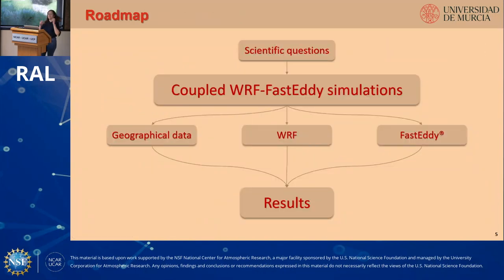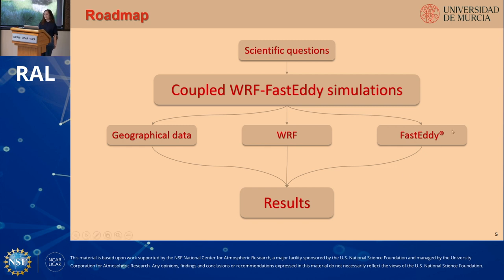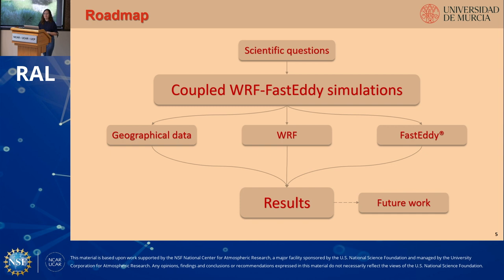To answer our scientific questions, we've decided to perform a series of coupled WRF and FASTEDI simulations that mainly need three ingredients: the geographical data to describe the characteristics of the surface, the WRF simulation which gives us the initial and boundary conditions for the micro-scale simulations, and the FASTEDI model to perform the micro-scale simulations. The WRF and FASTEDI configurations are going to be the same for all experiments, but we are going to change the geographical data — in particular, the land cover and the roughness length.